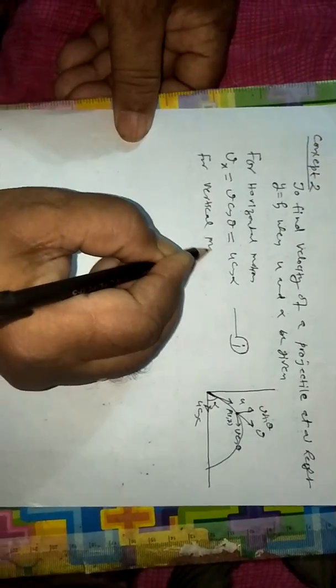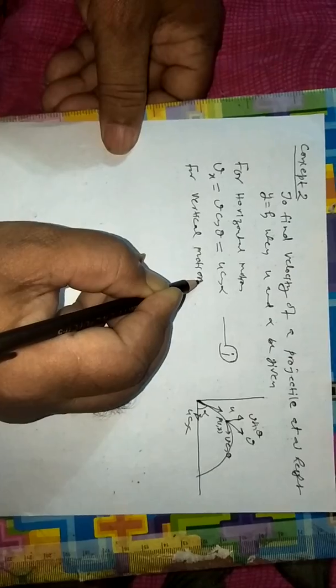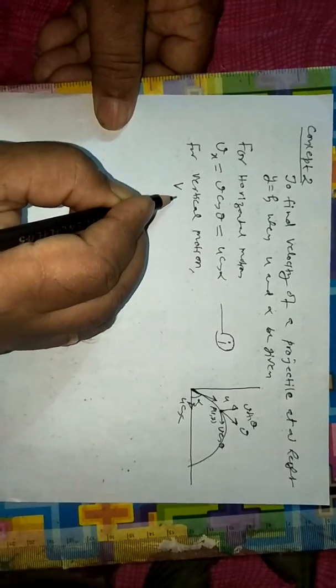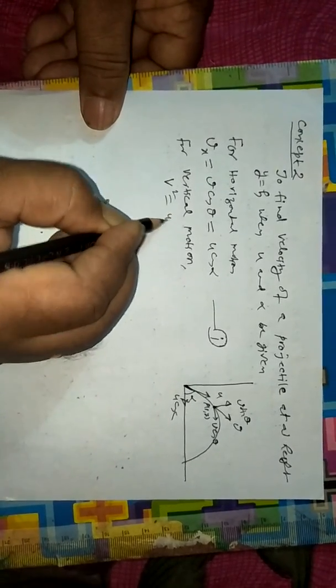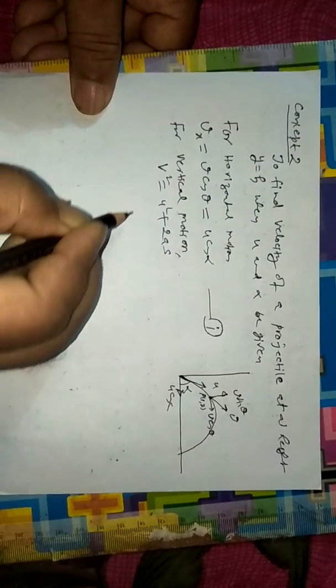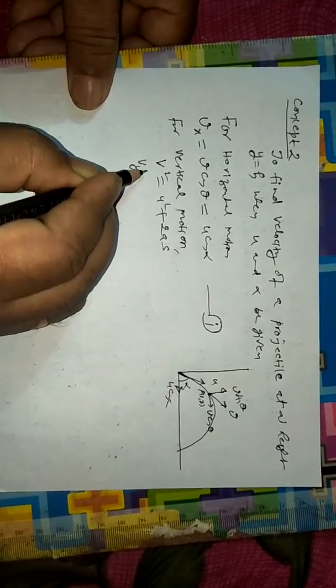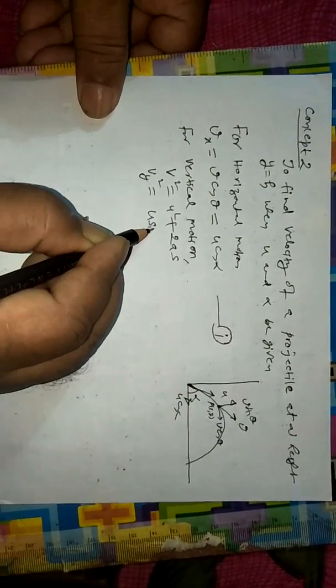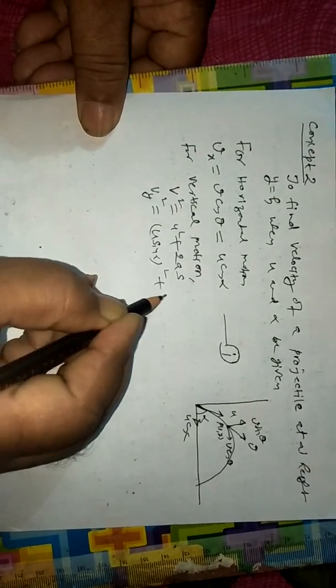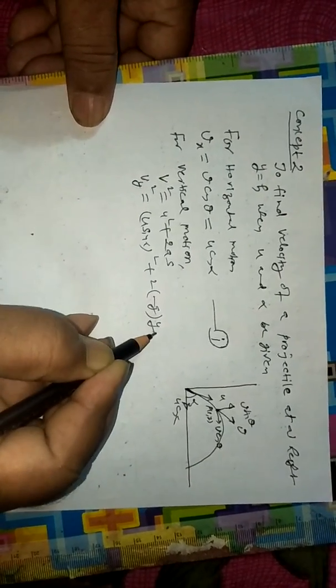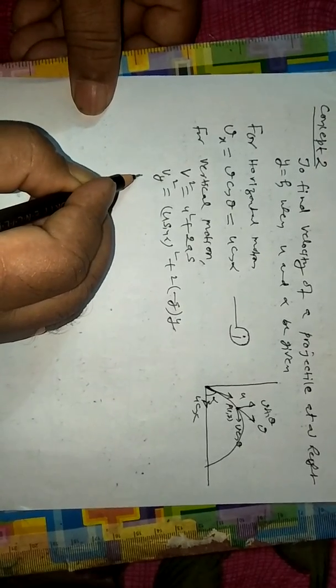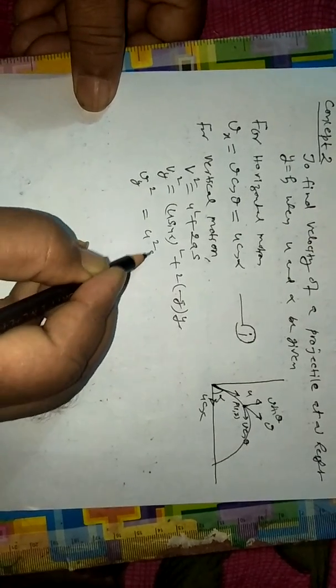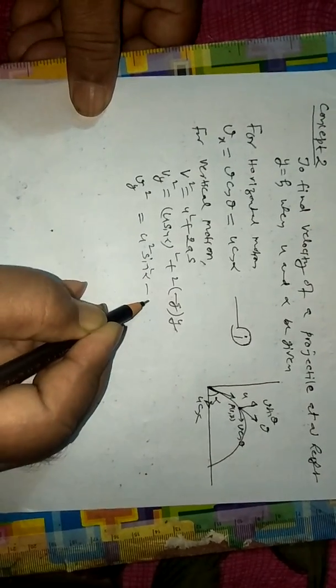For vertical motion, v squared equals u squared plus 2as. So v_y squared equals (u sin alpha) squared plus 2 times negative g times y. v_y squared equals u squared sin squared alpha minus 2gy.